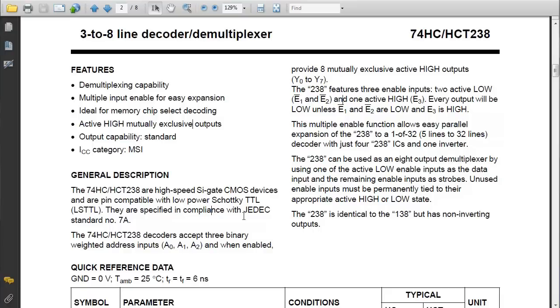We have to enable the chip to get it to work as expected, and we enable it through these three pins: E1, E2 and E3. E1 and E2 are active low, which explains the bar above them, and E3 is active high. Each of our eight outputs will be low unless E1 is set to low, E2 is set to low and E3 is set to high.